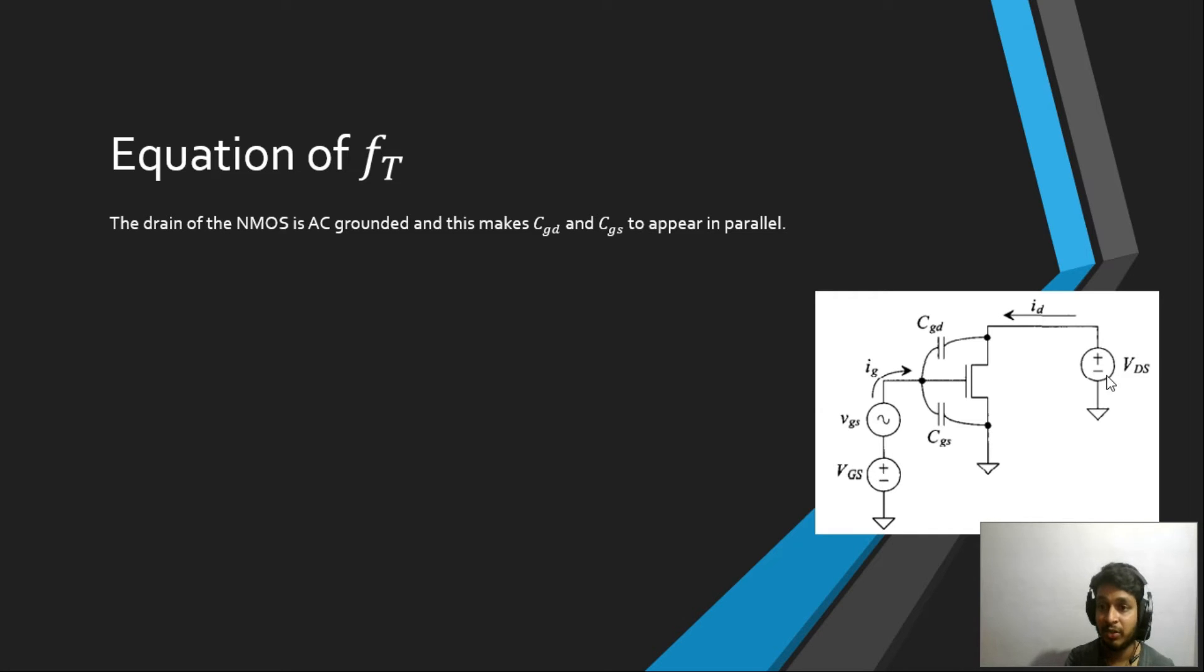We are going to do the AC analysis, so you can neglect these two DC sources because they are AC ground. For AC, all these sources, current and voltage—the voltage sources get shorted, so they are AC ground. If you see, this VDS, if it becomes AC ground, that means this drain is connected to the ground, or this capacitance is connected to the ground, which means this capacitor and this capacitor look like they are in parallel. With that, we can try to derive the equation.